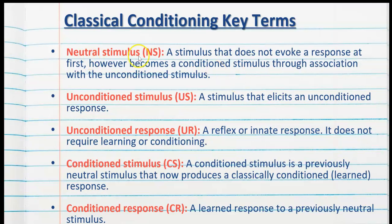The neutral stimulus or NS is a stimulus that does not evoke a response at first, however becomes a conditioned stimulus through association with the unconditioned stimulus. In the Pavlov experiment, the neutral stimulus was the bell because it starts off neutral — it did not evoke a response at first but became the conditioned stimulus through association. With the Little Albert experiment, the white rat starts out neutral — it did not evoke a response at first but became the conditioned stimulus through association.